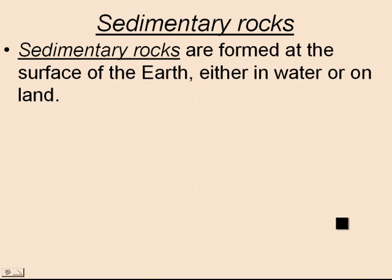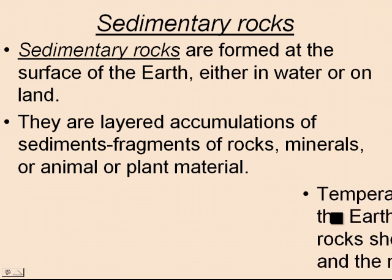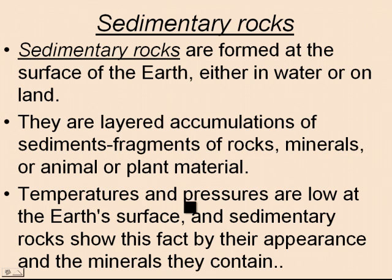The next is sedimentary rock, which are formed on the surface of the Earth. They can be formed on land or underwater. They are layered accumulations of sediment, fragments of rock, minerals, animals, or plant material — basically dust piled on top of dirt, over and over, over thousands of years, packed together tightly. As these things get further and further below the Earth's surface, they get packed tighter by the pressure of the Earth's surface.